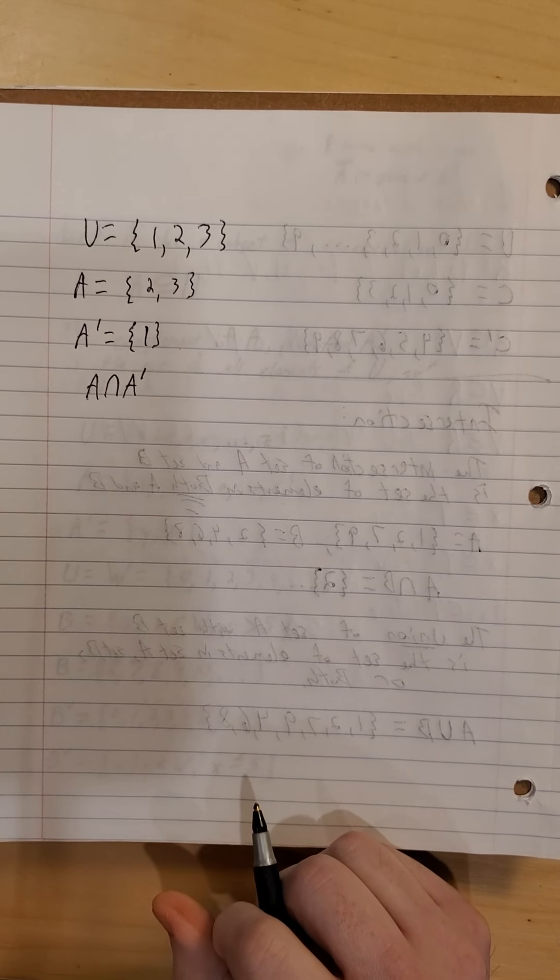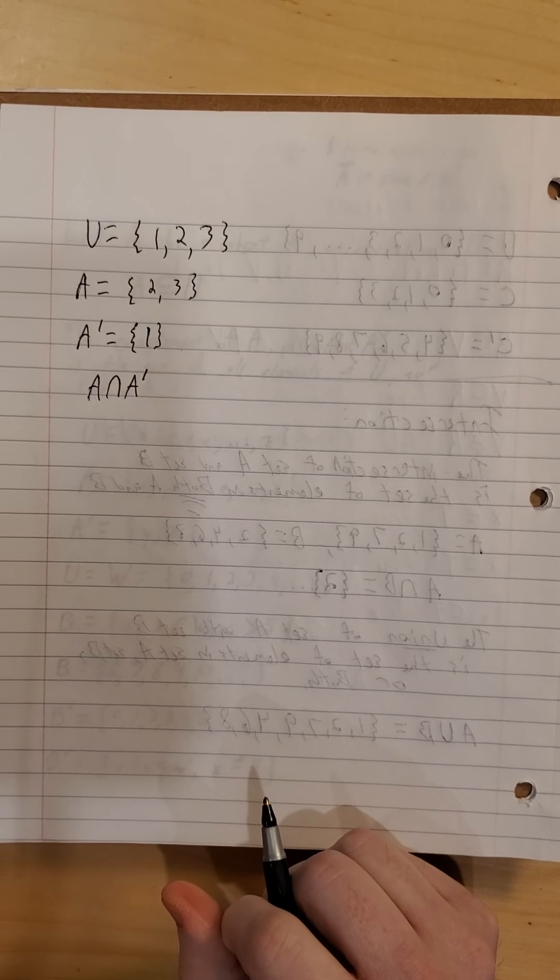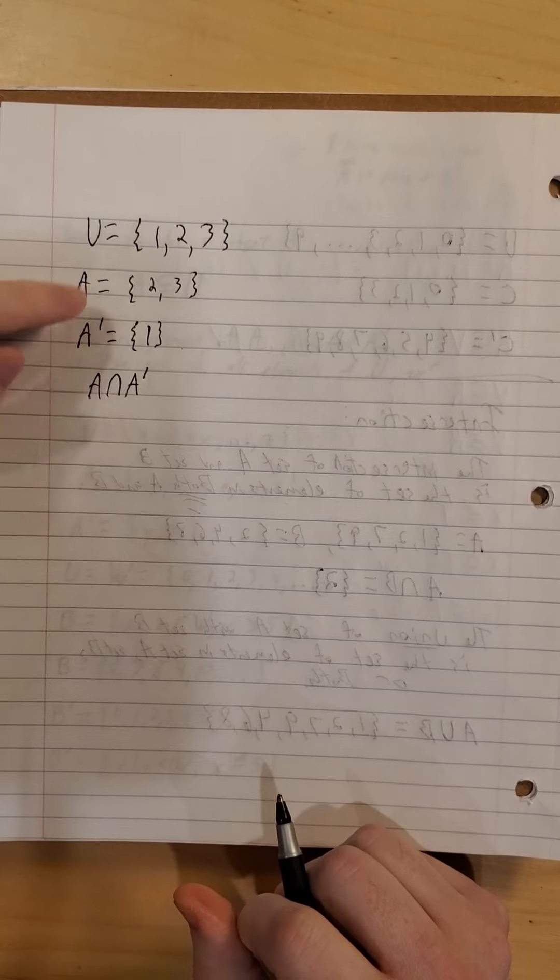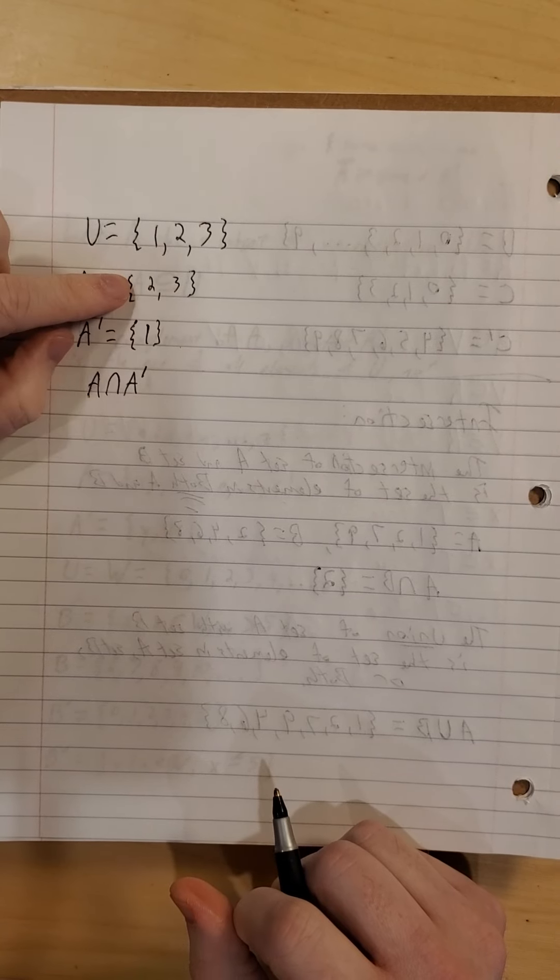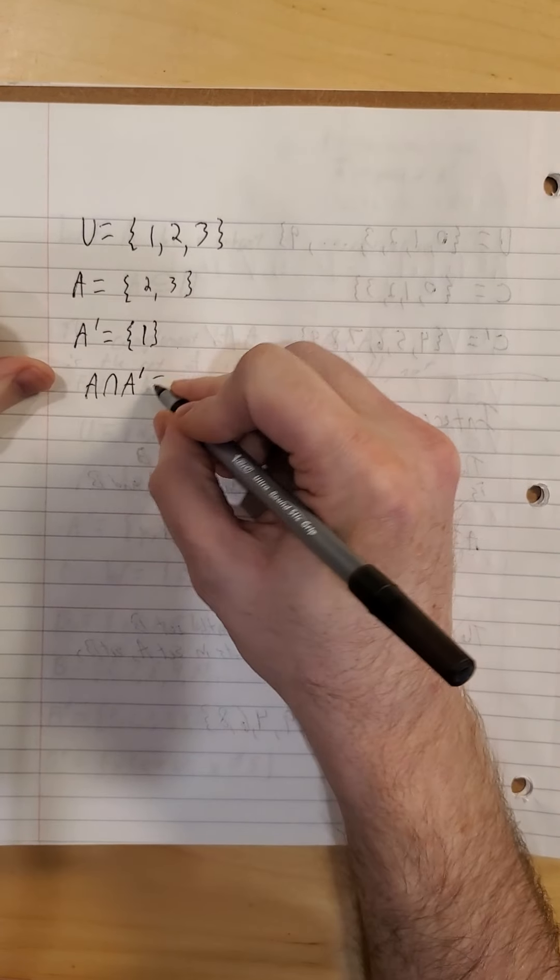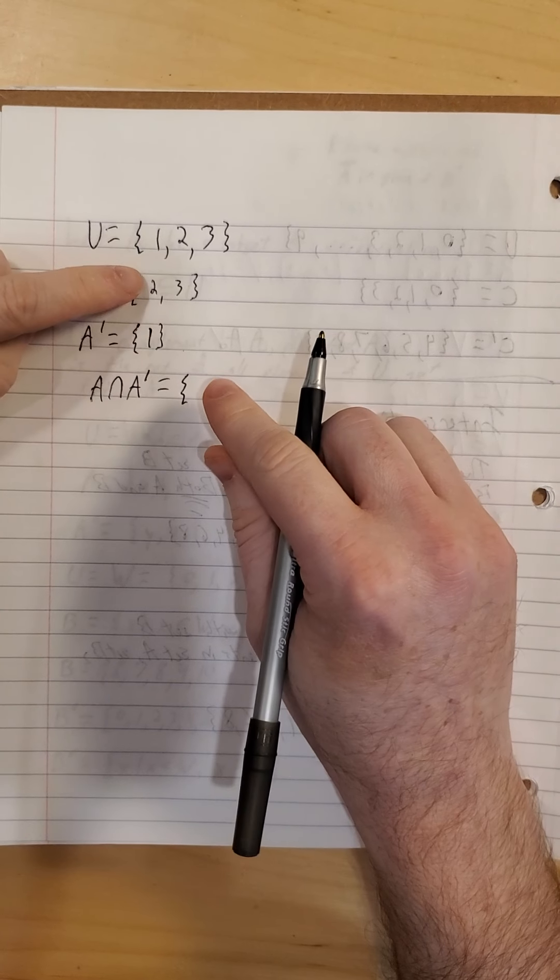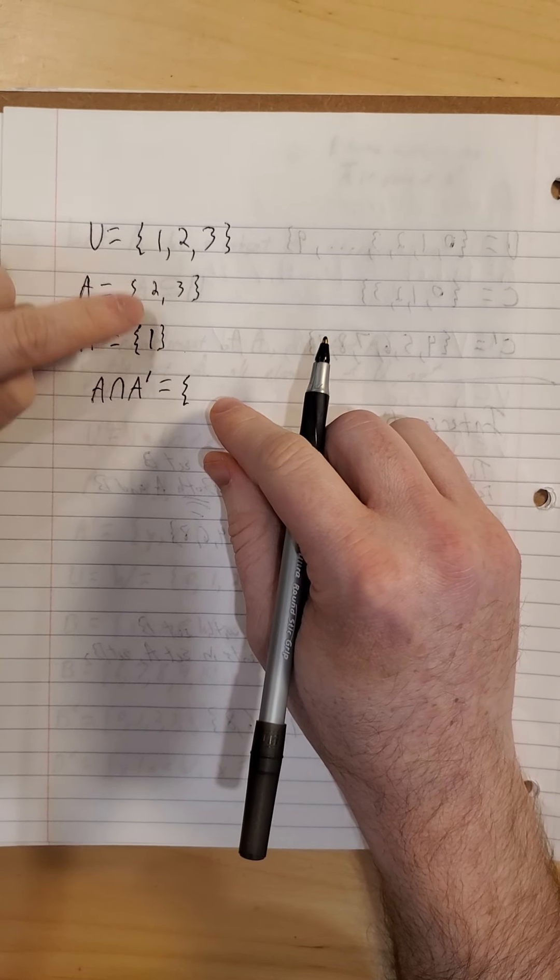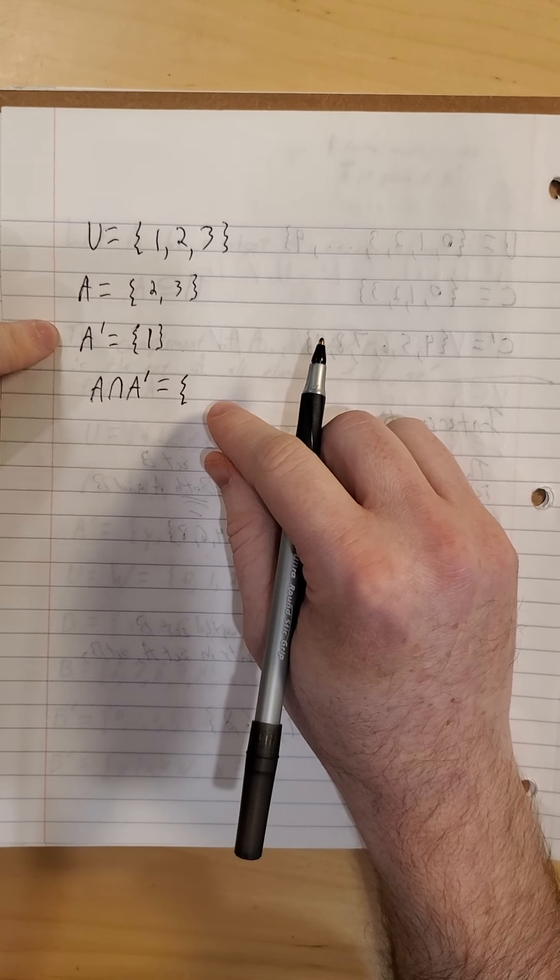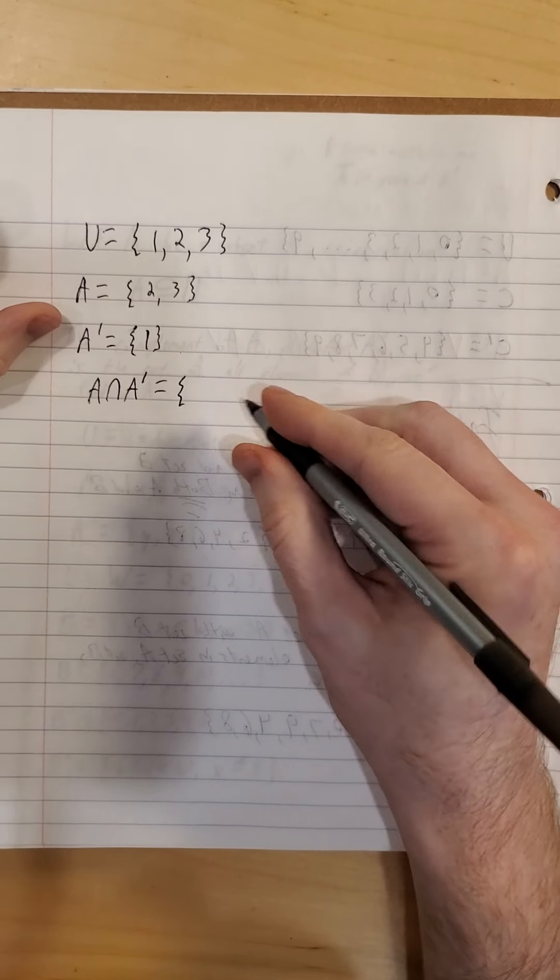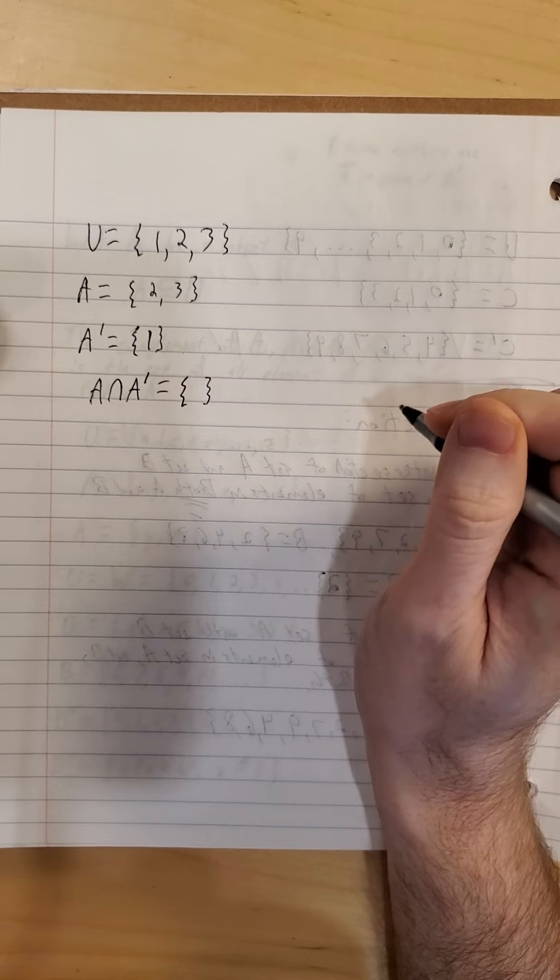So we'll start with A intersection A complement. So intersection means things that are on both lists. So union or intersection, it is going to build a set. I don't see a 2 in this complement. I don't see a 3 in this complement. They have nothing in common.